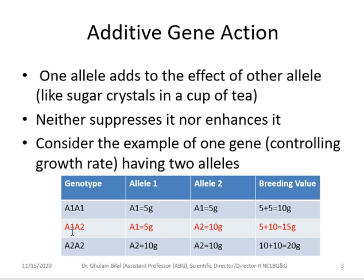For a1a2, a1 contributes 5 grams and a2 contributes 10 grams, so the value is 5 + 10 = 15 grams. For an a2a2 animal, a2 contributes 10 grams each, so 10 + 10 = 20 grams. This is additive gene action — one allele is simply adding to the effect of the other, and their total becomes the breeding value of the animal for that specific trait.